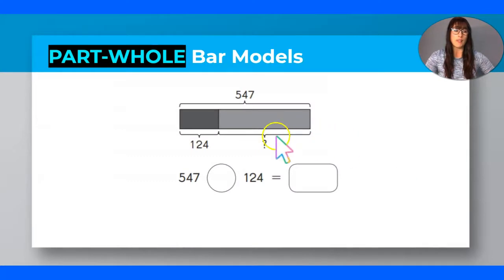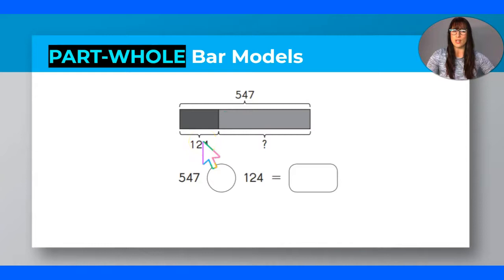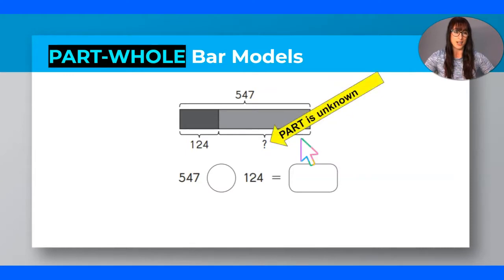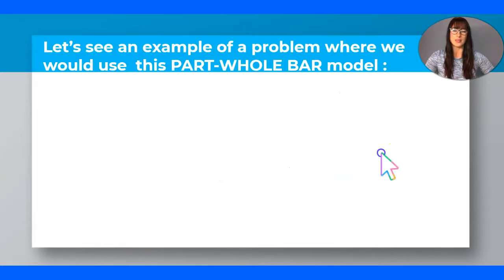Now let's look at another part-whole bar model where a part is missing, because that can happen too. For example: there are 547 children playing in the park and 120 of those children are boys — how many are girls? That would be an example of this bar model. When I look at this bar model, my part is unknown, so the game changes — if the part is unknown, the procedure I will do is subtraction. That's correct, you have to subtract to find out what the part is.